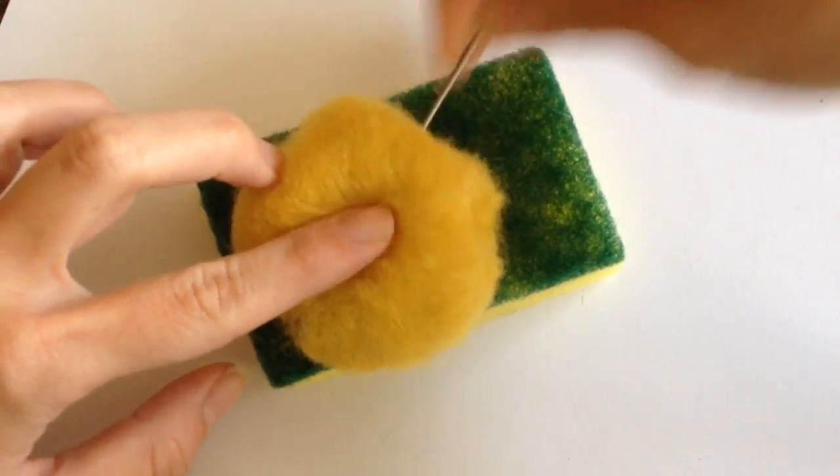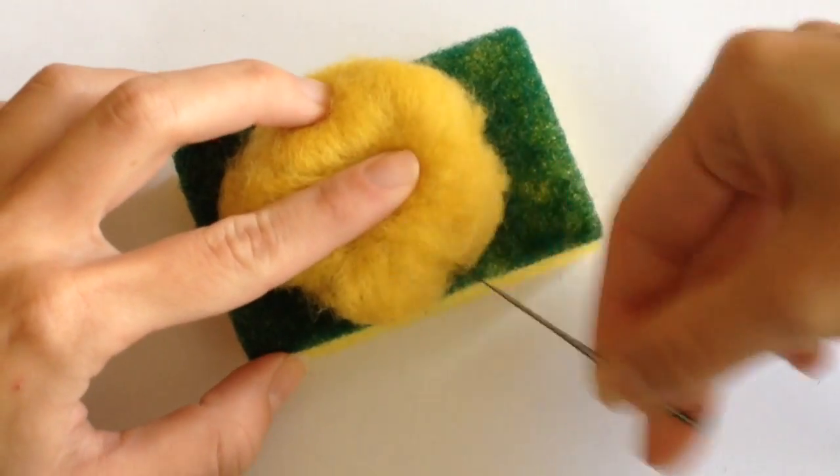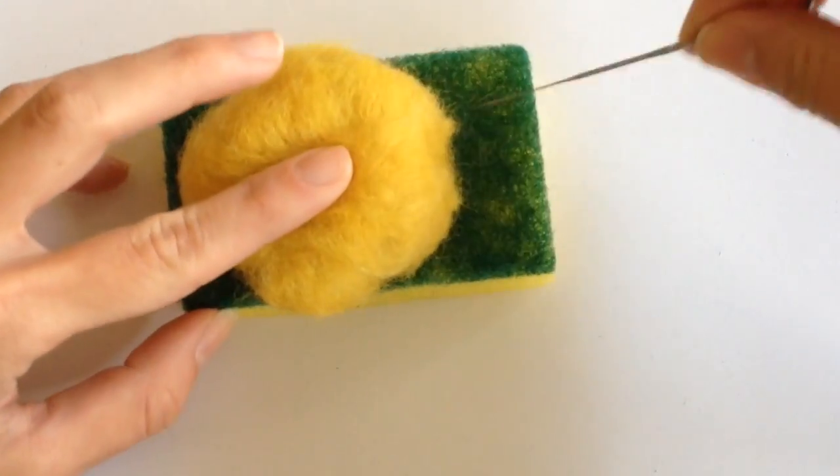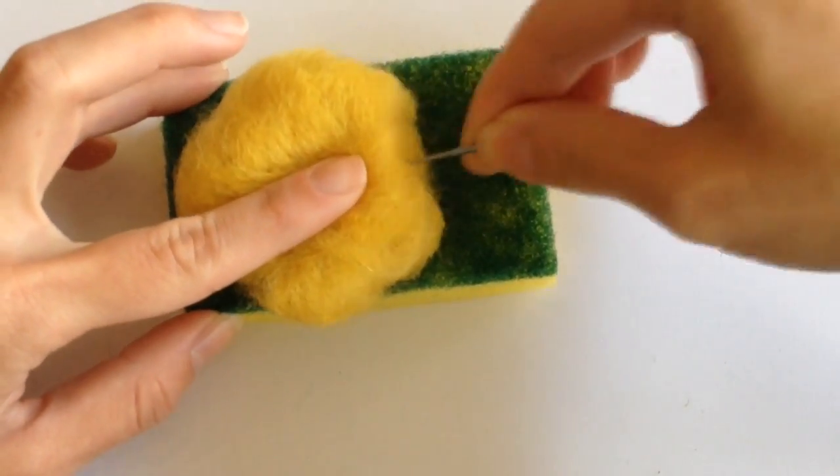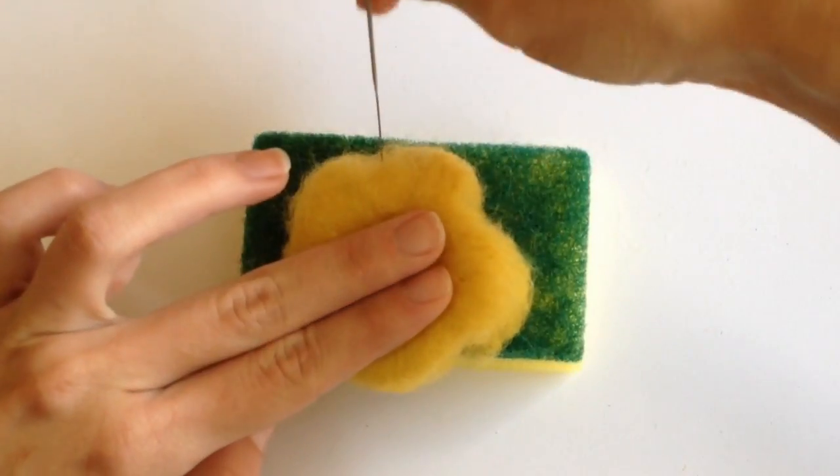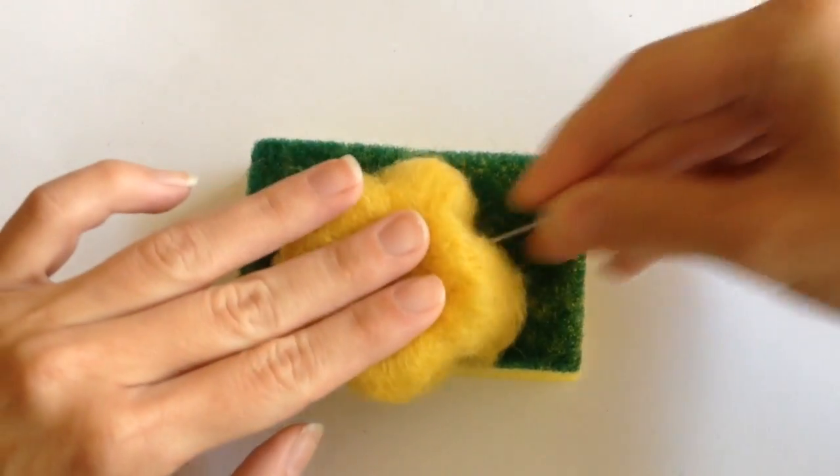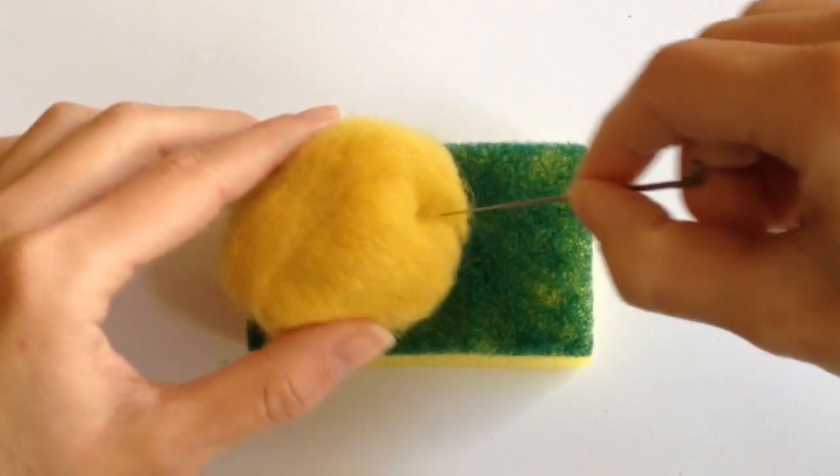The nice thing about needle felting is that it's not an exact science. You don't have to be perfect and as you can see, I'm just guesstimating where the arms are supposed to be. The more you poke your little plushie, the more you kind of get an idea where you want pieces to be and where you don't want pieces to be.